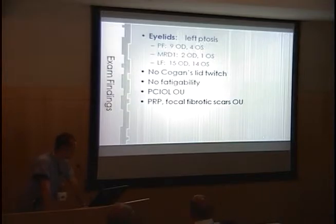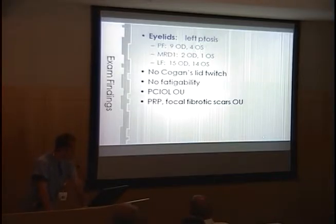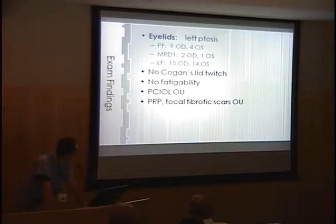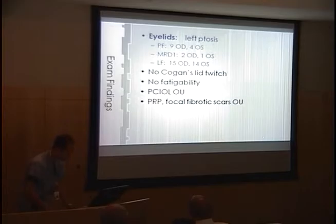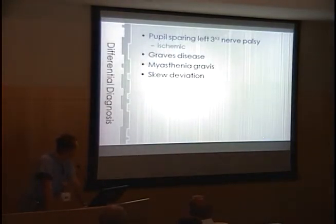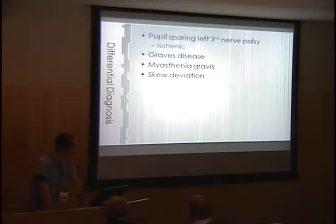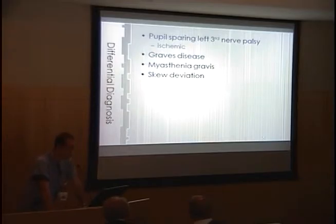We did measurements of his ptosis — I have a picture I'll show you in just a second. He had left ptosis, and you can see the differences in all of our eyelid measurements; the ptosis was significant on the left side. We also tested a Cogan's lid twitch, which was negative, and there was no fatigability on exam either. On slit lamp examination we noted he had posterior chamber IOLs, and on dilated fundus exam we saw the PRP laser scars and focal scars. Our differential included a fourth cranial nerve palsy, a pupil-sparing third nerve palsy possibly related to his diabetes, Graves' disease, myasthenia gravis, and skew deviation.